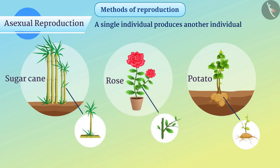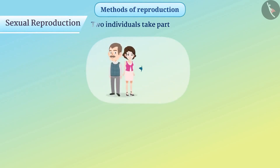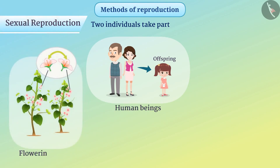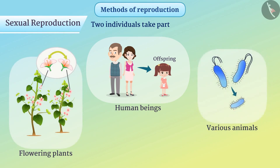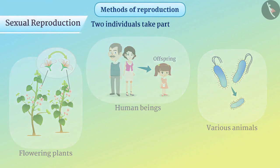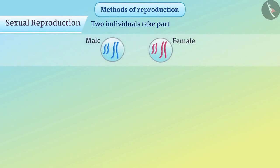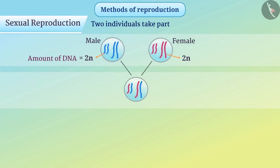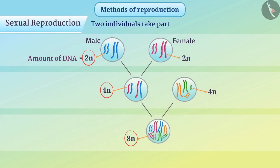In contrast, the reproduction in which two individuals take part is called sexual reproduction. For example, human beings, flowering plants, and various animals produce new organisms by sexual reproduction. If male and female both take part in sexual reproduction, the amount of DNA that the offspring gets will be twice that of the individual DNA, and therefore the amount of DNA goes on increasing over generations.